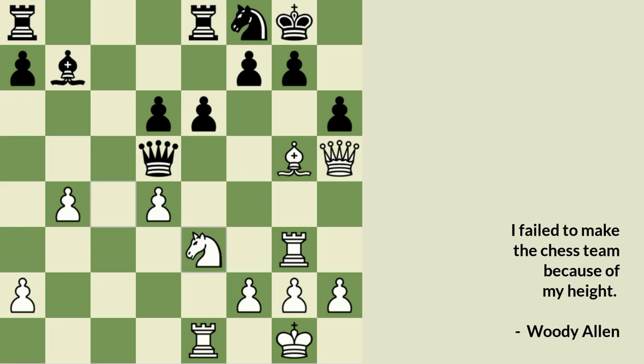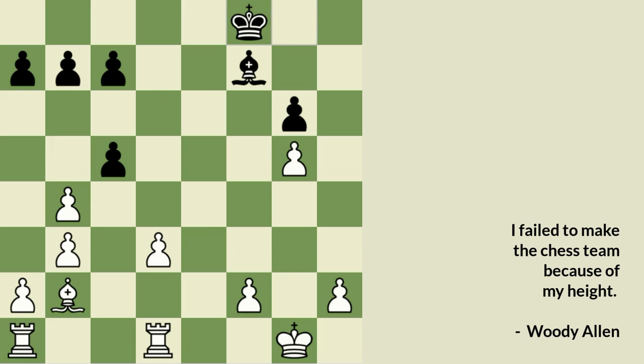Knight on e3 attacking the queen, queen again moves back, and then an amazing move — bishop to f6 was played. Black can capture the white queen, but then black falls for the windmill and cannot prevent it. If black plays something else, the windmill will still happen in any case.